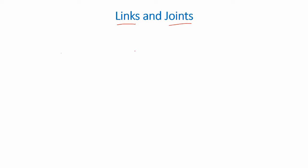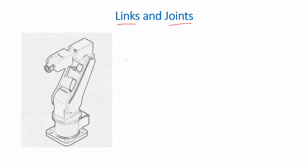Before we get into assigning frames for a robot, let's have a look at links and joints — the two things that make up a robot system. Any robot, such as the one shown here, can be thought of as a set of rigid bodies connected in a chain through multiple joints. For example, this robot has a joint here that rotates about this axis, and another joint on top, and these two joints are connected through a rigid structure called a link.